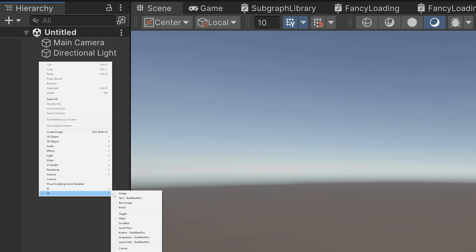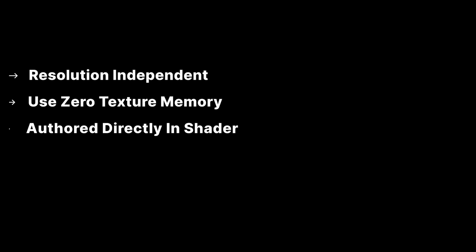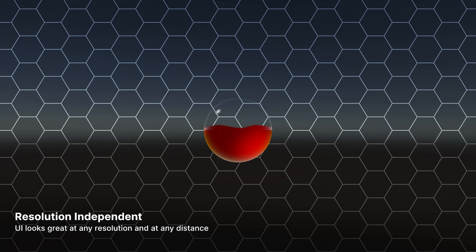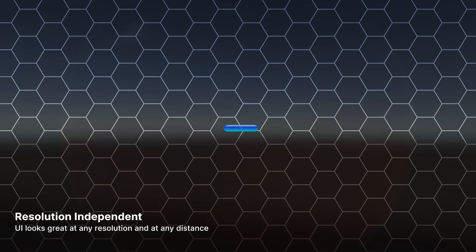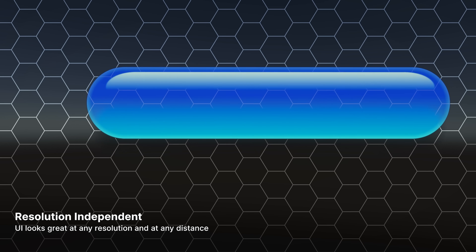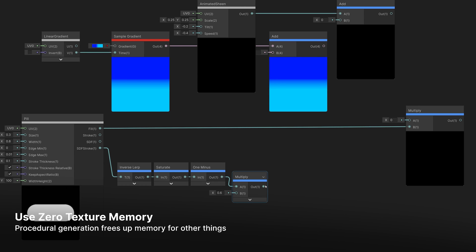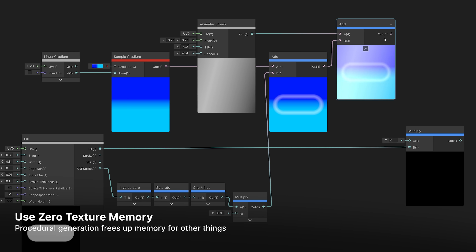Using UGUI and Shader Graph, you can create user interface elements that are resolution independent, require zero texture memory, can be authored and edited directly in Shader Graph inside of Unity, automatically adapt to aspect ratio, and contain all visual states and behaviors. These UI elements are resolution independent — because they're generated procedurally, you can add them to any screen whether it's a tiny smartphone or a 100-inch 8K TV. Regardless of the resolution or camera distance, the UI elements will always look crisp and clear. The visuals are created using math, so they don't rely on textures at all, meaning they require zero texture memory.